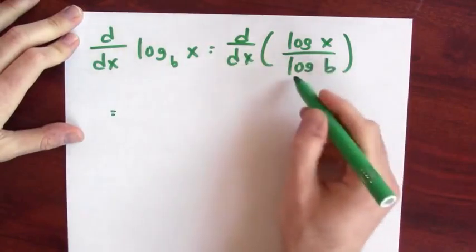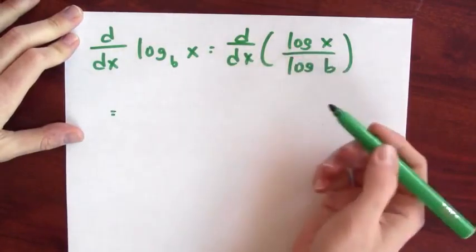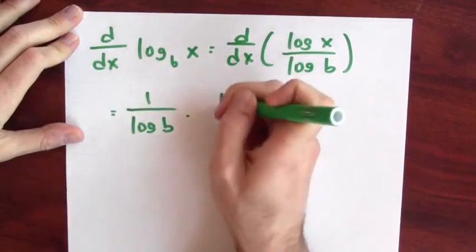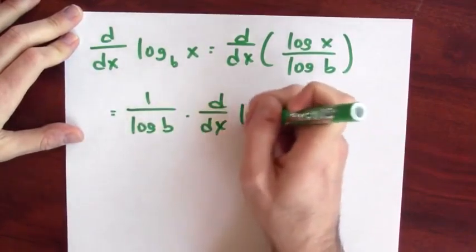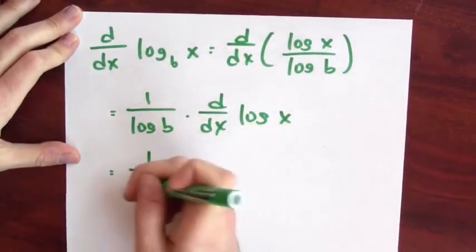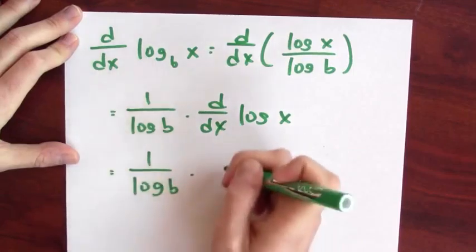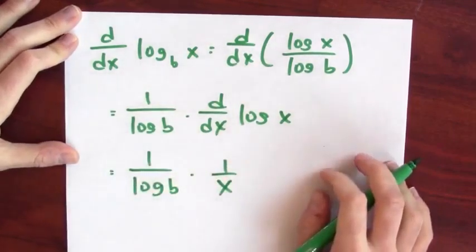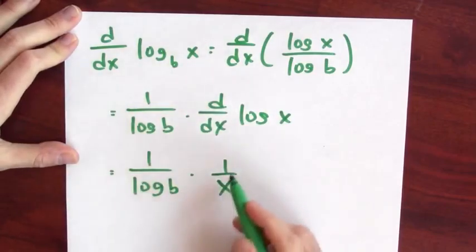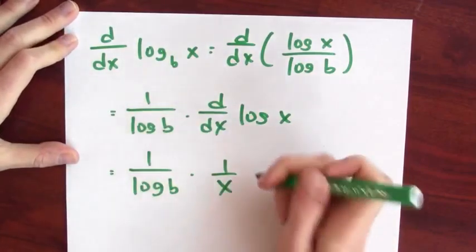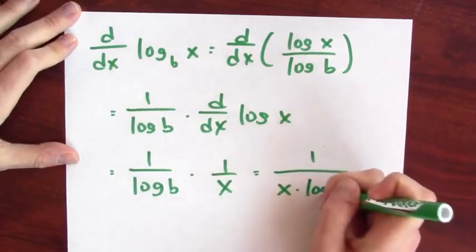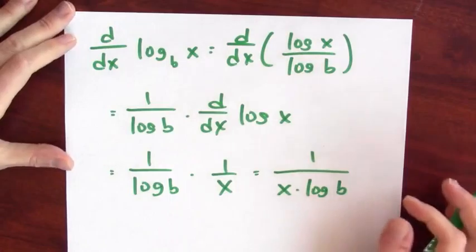But the log of b is a constant, and the derivative of a constant multiple is just that constant multiple times the derivative. So this is 1 over log b times the derivative of the natural log of x. But I know the derivative of the natural log of x, it's 1 over x. So the derivative of log of x base b is 1 over log b times 1 over x, or maybe another way to write this would be 1 over x times log b.